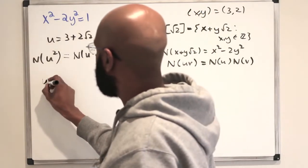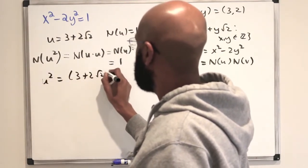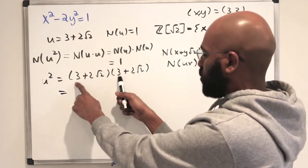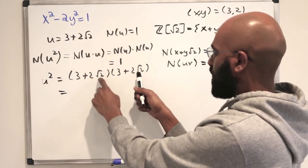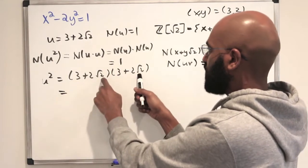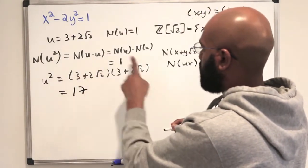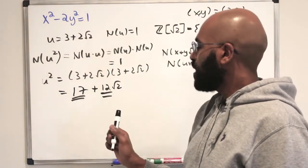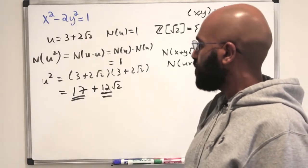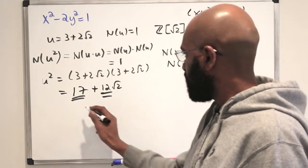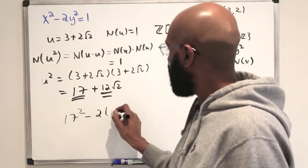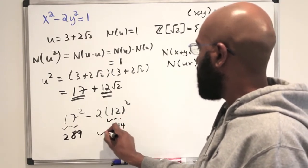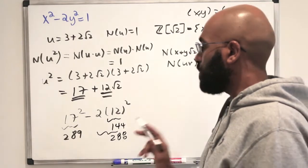Let's check what that is. u squared is (3 plus 2 root 2) times (3 plus 2 root 2). The part not beside the radical is 3 times 3, which is 9, plus 4 times the square root of 2 squared, which gives 8. So 9 plus 8, we get 17. Then we get 3 times 2 root 2 twice, which gives 12 root 2. So u squared equals 17 plus 12 root 2. These numbers, because the norm of u squared is 1, must satisfy the equation. Let's check explicitly: 17 squared minus twice 12 squared. 17 squared is 289. 12 squared is 144, times 2 is 288. And indeed 289 minus 288 is 1.